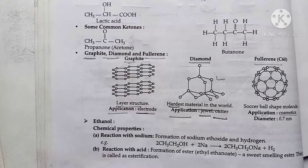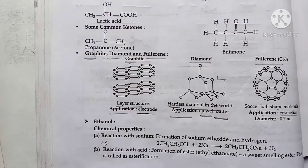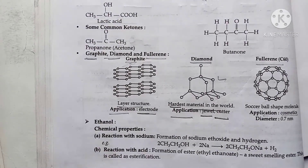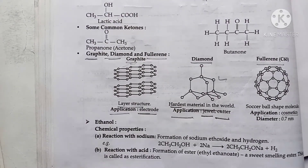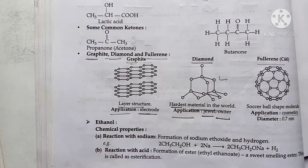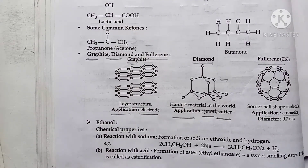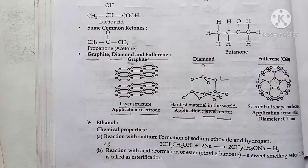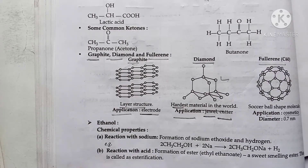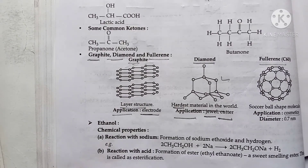The most well-known allotropes of carbon are diamond and graphite. Please share how you feel about this video in the comment section. To watch other videos, visit the channel SSC Preparation. If you liked the video, please like and share. Thanks for watching.